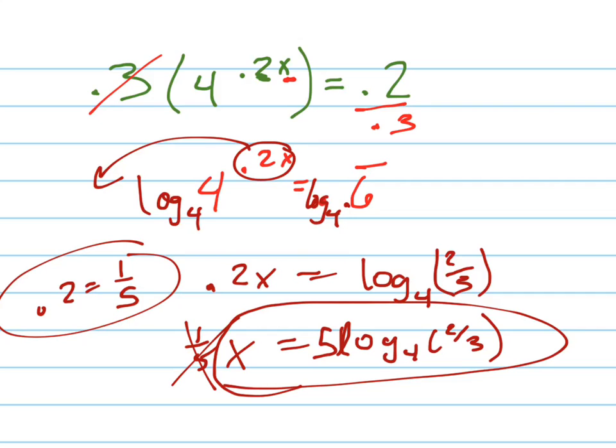5 times log base 4 of 2 thirds. And you could write it a couple other ways too. You could write it as 5 log base 4 of 2 minus 5 log base 4 of 3, if you wanted to.